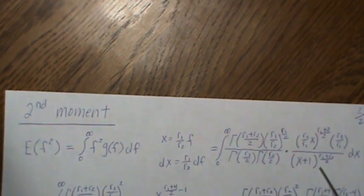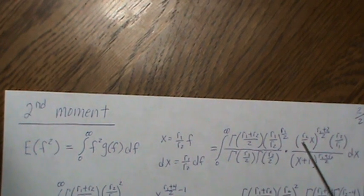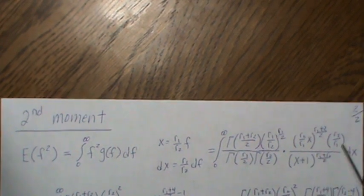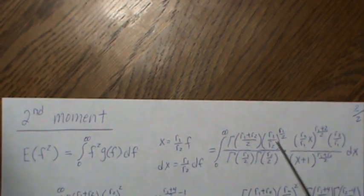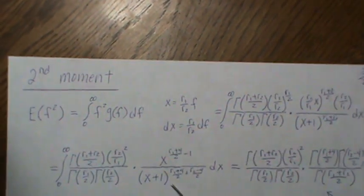Now, here, we pull this, the r2 over r1 out, combine it with this, and then cancel with this. And then what's left over, we come down to here.